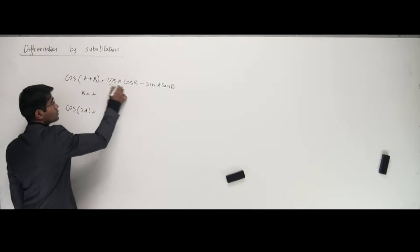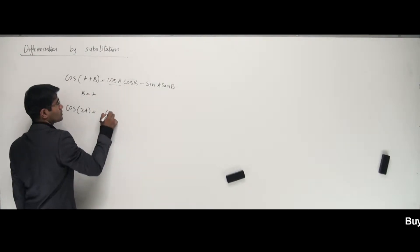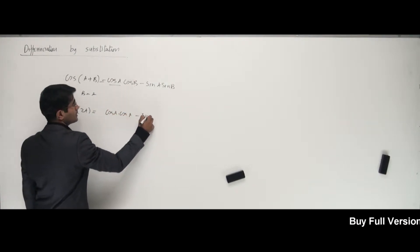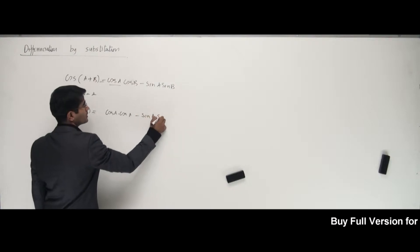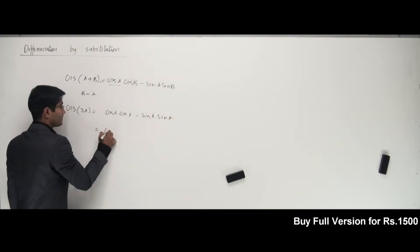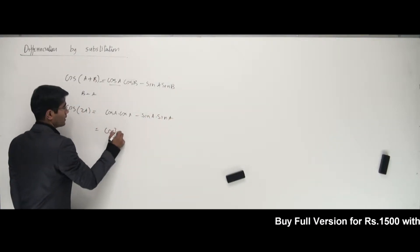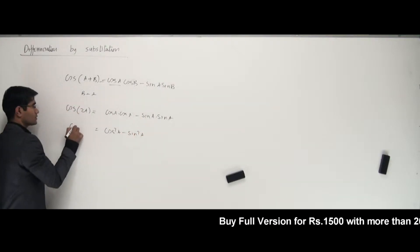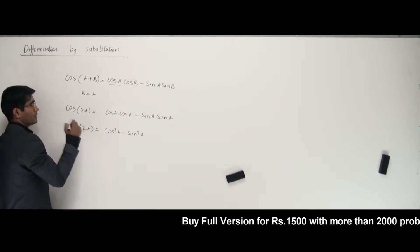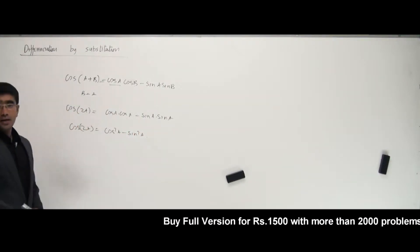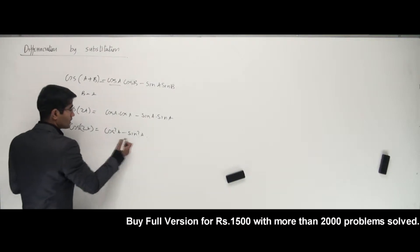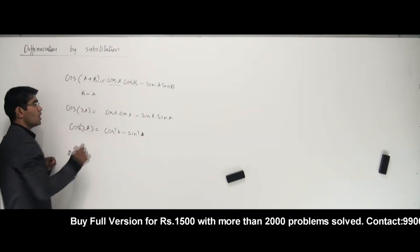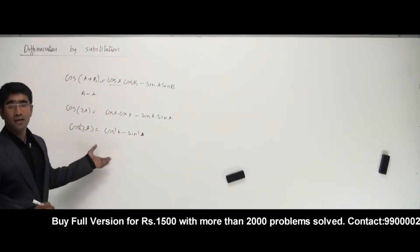And that goes like cos a times cos a minus sin a times sin a, that is cos squared a minus sin squared a. So that is cos 2a. I'm just deriving this so that you guys can remember it and at least know how it basically comes from.